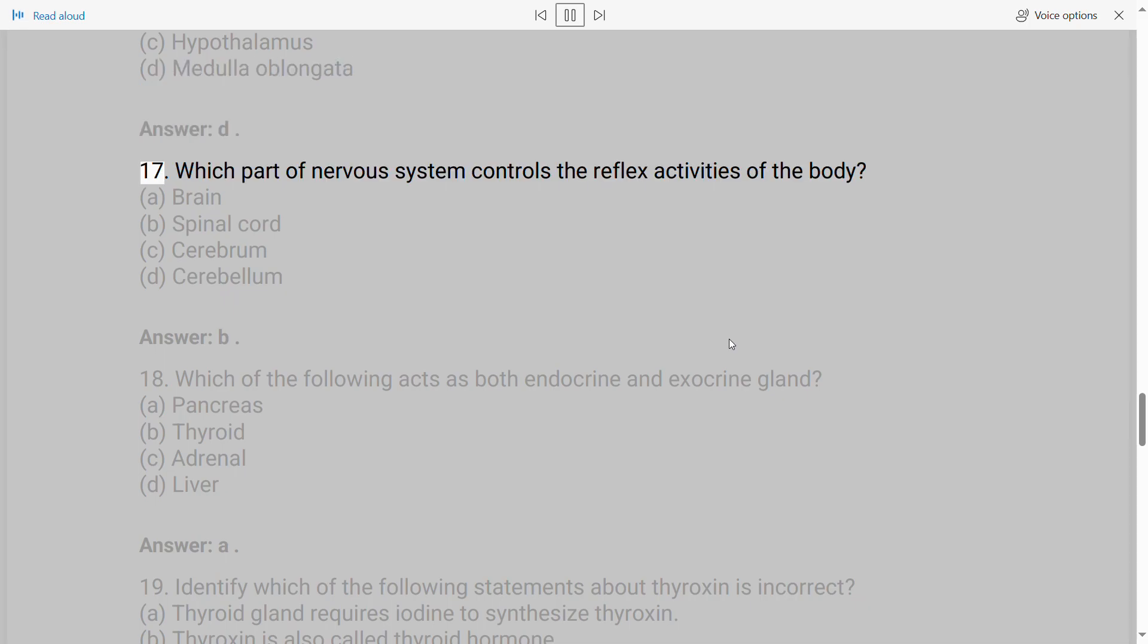17. Which part of nervous system controls the reflex activities of the body? A. Brain B. Spinal cord C. Cerebrum D. Cerebellum. Answer: B.